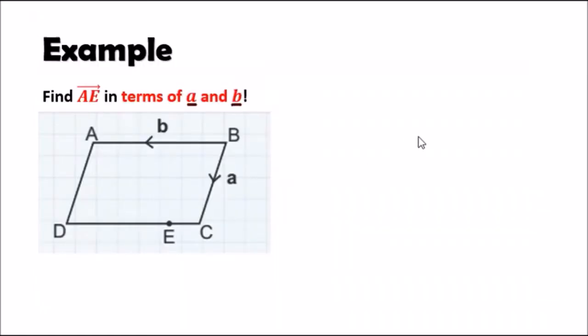So the example tells us that we need to find the vector AE in terms of the smaller a and b vectors. Now looking at this diagram, what do we have here?